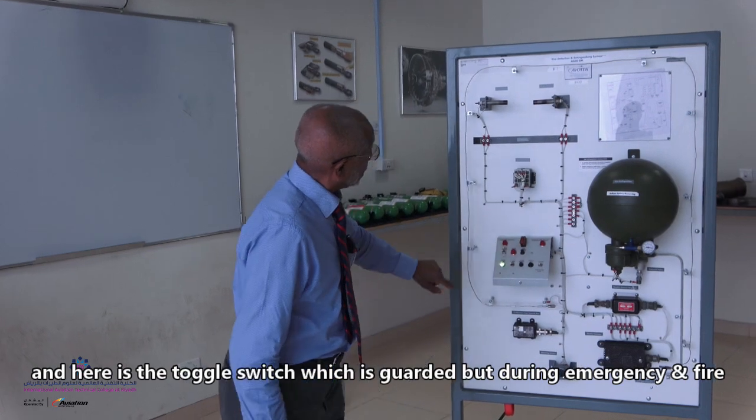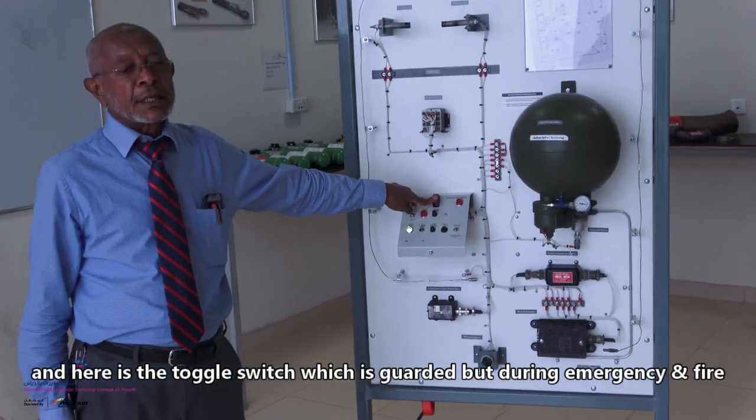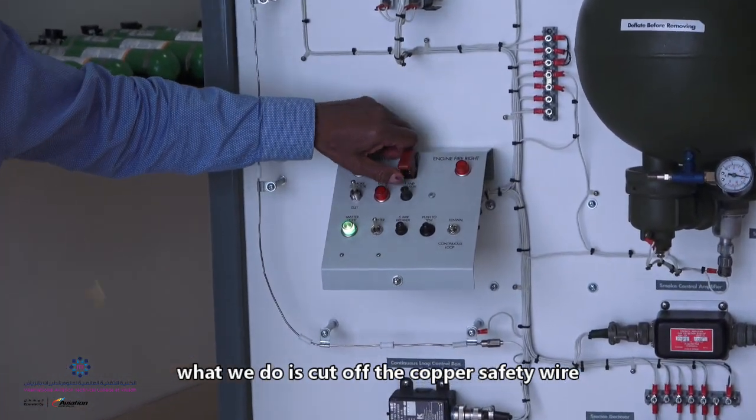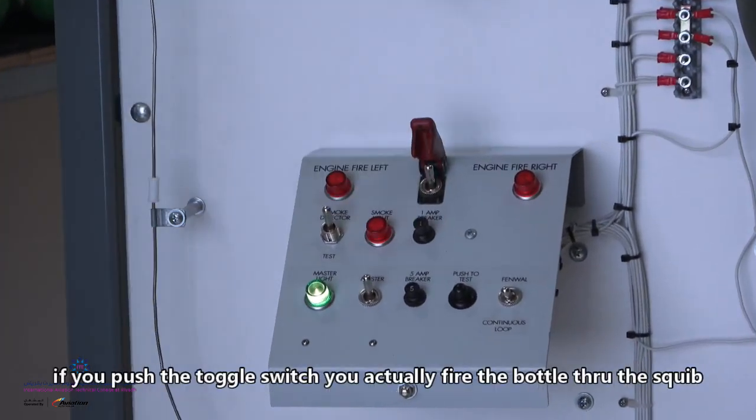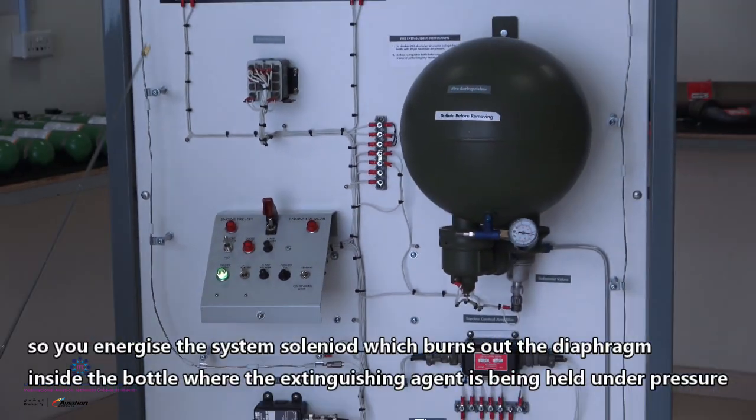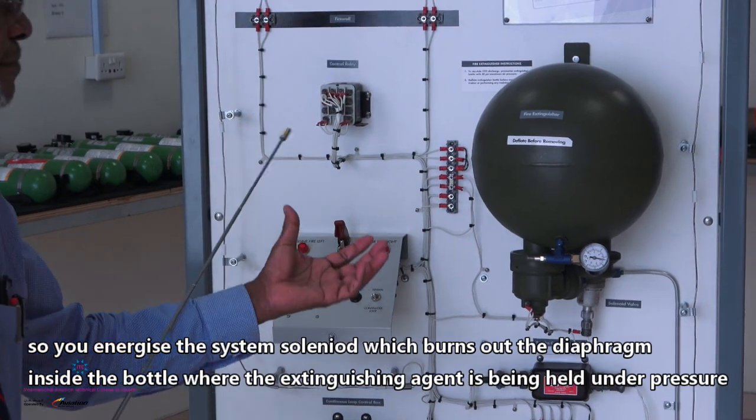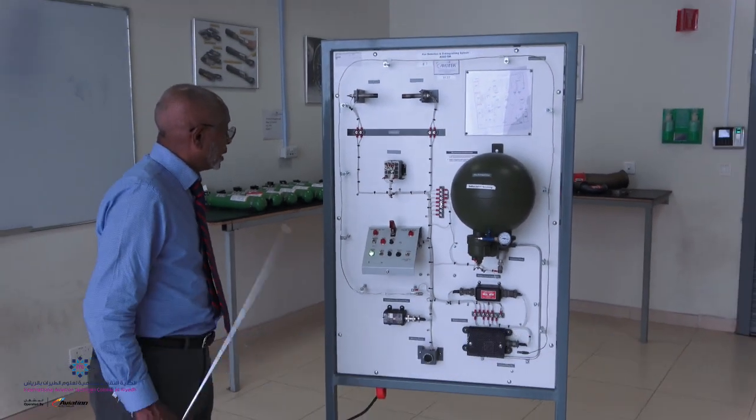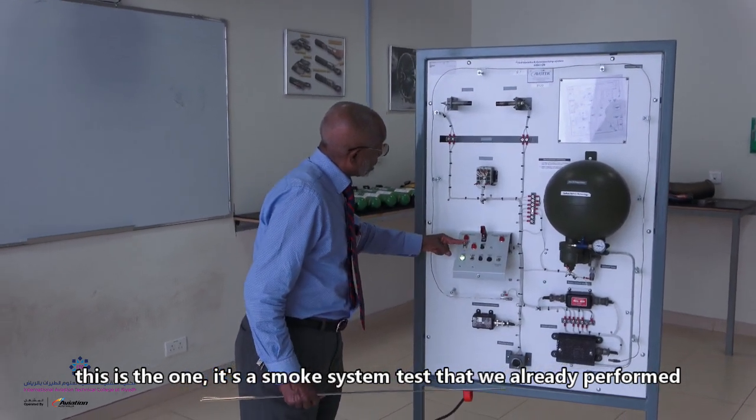As you see here you have the toggle switch. It is guarded all the time, but during emergency and during fire, what we do is we cut off the copper safety wire and then we open it. If you push the toggle switch, you're firing the button through the squib, so you're energizing the solenoid which burns out the diaphragm inside the bottle where it's holding the pressure and the agent.